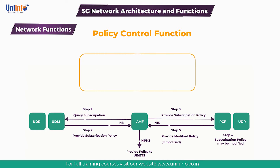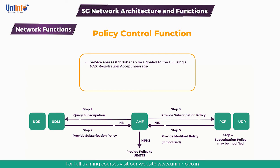Service area restrictions can be signaled to the UE using a NAS registration accept message. The network is responsible for applying restrictions when the UE is in the CM connected or RRC connected state. In this case, the network can apply handover restriction lists to prevent specific mobility paths.